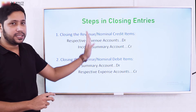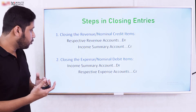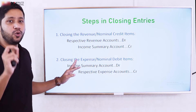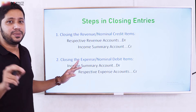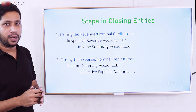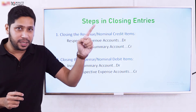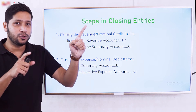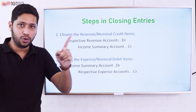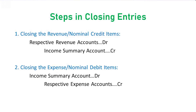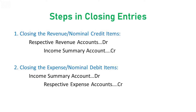The second step is to close the expense items. Expense is a debit item. To close the expense accounts, we credit all expense items. So we credit each expense account to bring them to zero.